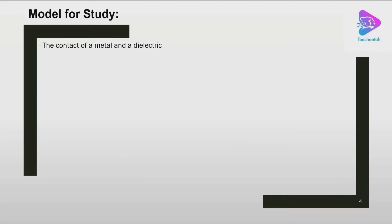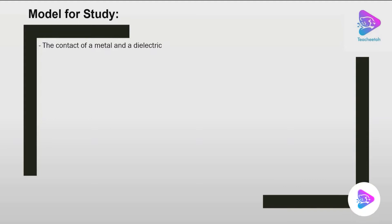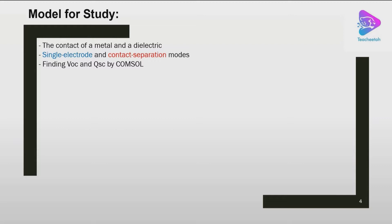In this video, we study the case of contact between a metal and a dielectric. For a dielectric-to-dielectric contact, we could use positive and negative surface charge density on the contact surfaces, which cancel out in full contact ensuring charge conservation. However, in a metal-dielectric system, we have to manipulate our boundary conditions to keep charge conservation. We are going to model the single electrode mode and compare it with the contact separation mode, finding the open circuit voltage and short circuit transfer charge by COMSOL.